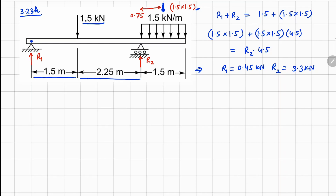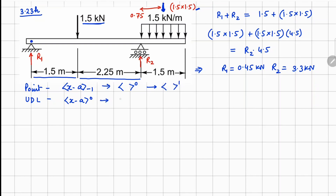In this beam we have point loads and UDL. For a point load we use ⟨x − a⟩⁻¹. For a UDL we use ⟨x − a⟩⁰. Integrating ⟨x − a⟩⁻¹ gives power 0, and one more integration gives power 1. The UDL integration gives power 1, and the second integration gives power 2 divided by 2.